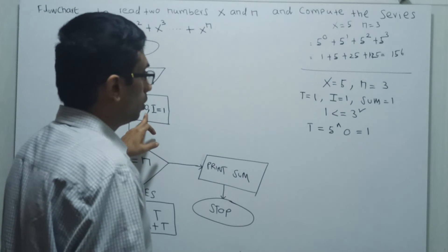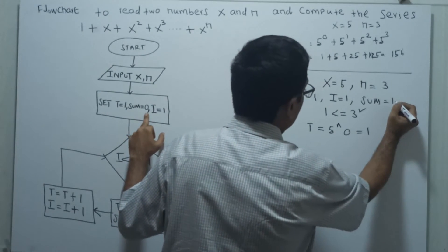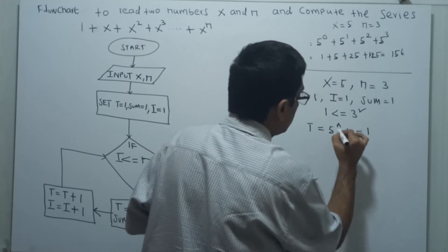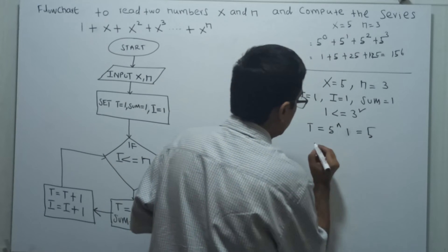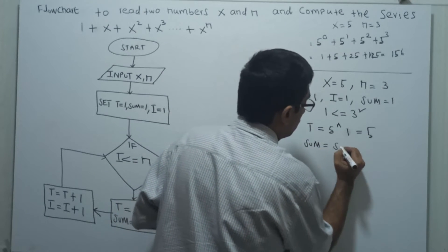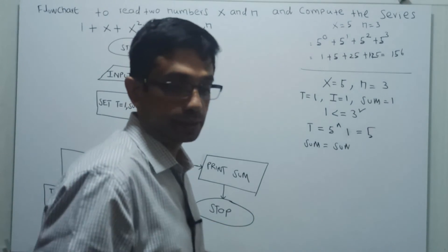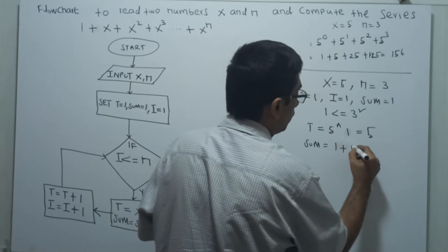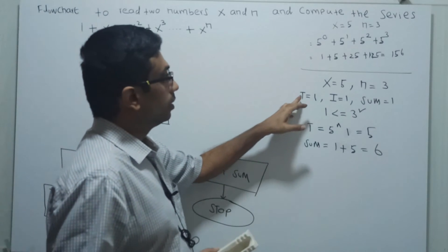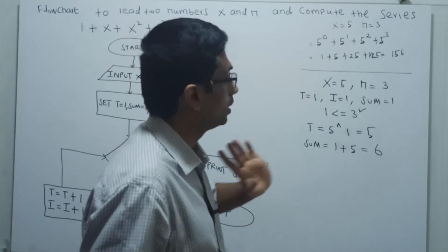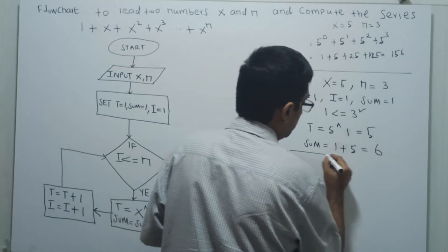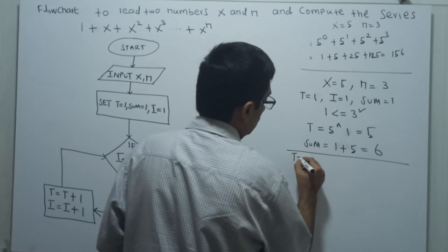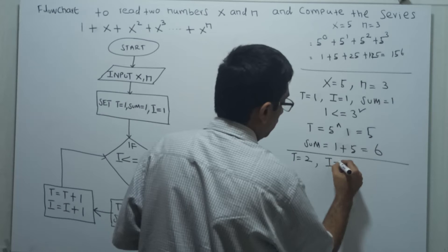The initial value of t equal to 1 and sum equal to 1. So t equal to x power t, which is 5 to the power 1, equal to 5. Sum equal to existing sum 1 plus t value 5, which is equal to 6. So 5 power 0 plus 5 power 1 — 1 plus 5 equal to 6 — completed. Now incrementing: t equal to 2, i equal to 2.